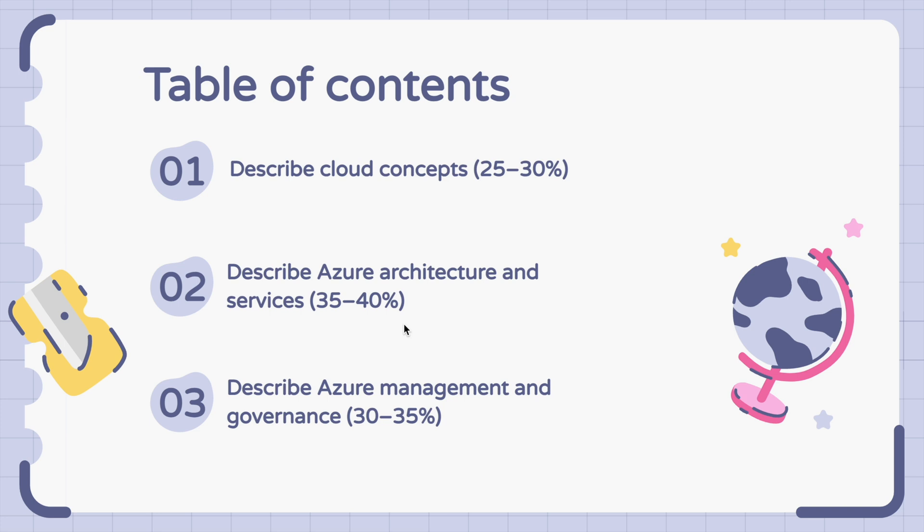And then after module two is done, we will be heading our way to module number three, described as Azure management and governance. In this, we will learn, okay fine, we know the cloud concepts, we know what all services we are going to opt for. In module number three, we will understand that how we have to manage them, what kind of rules or standards we have to follow in our cloud so that it's in accordance with the rules of the government and stuff. Once all these three modules will be done, my friend, you will be ready to take the AZ-900 certification. But just to make you comfortable, I will be providing you with a crash course at the end.